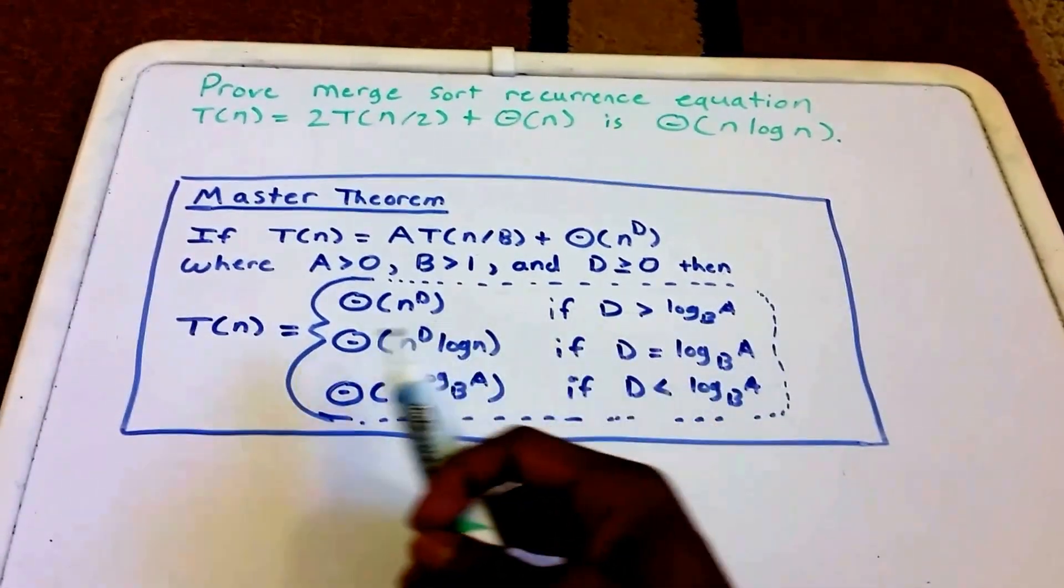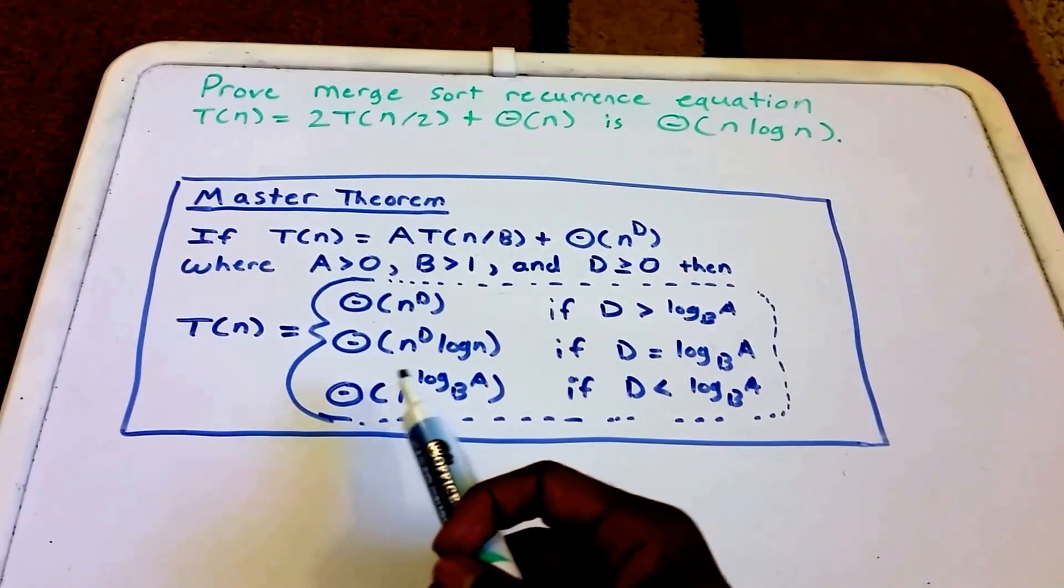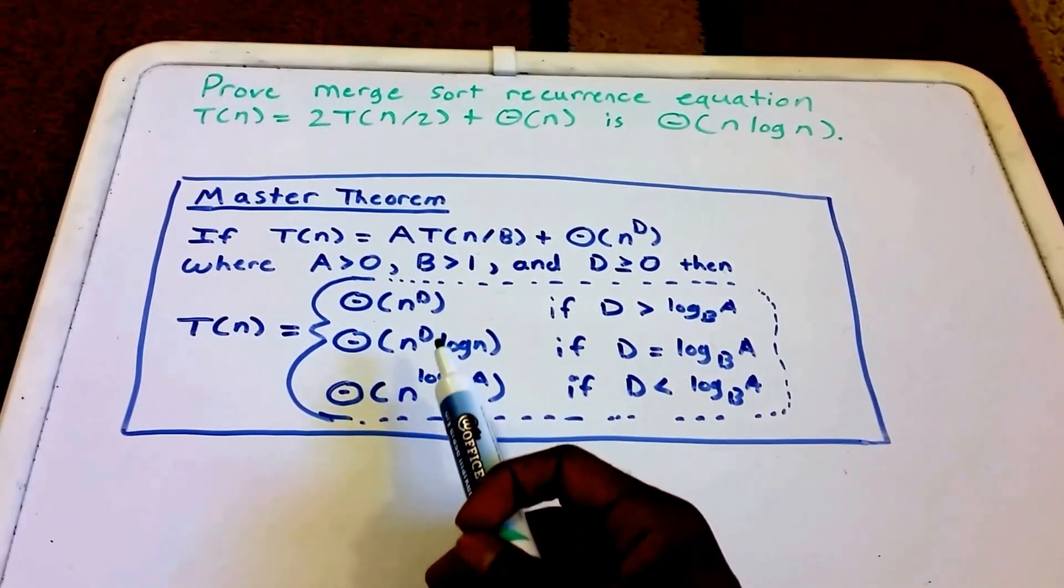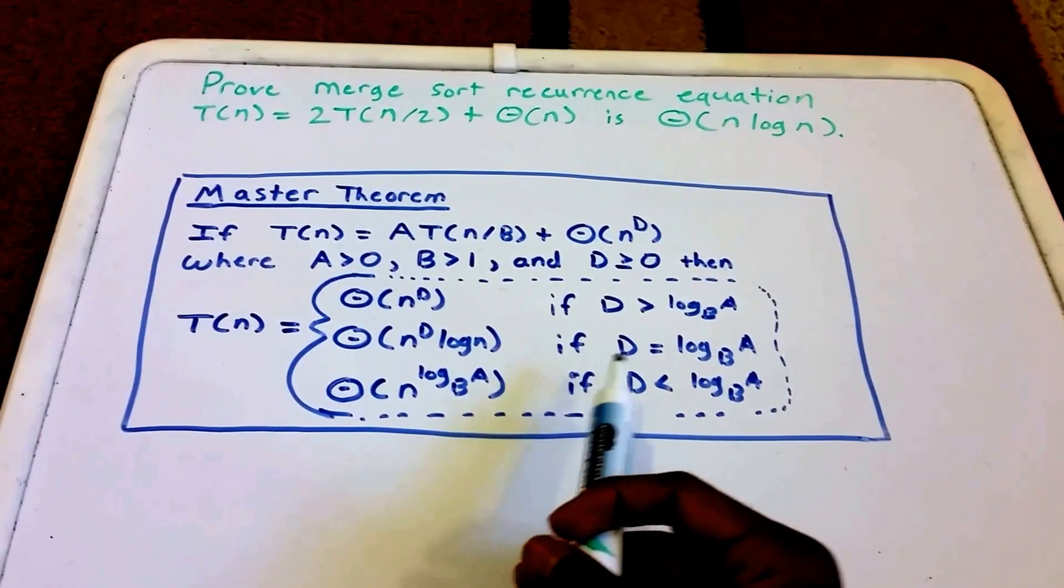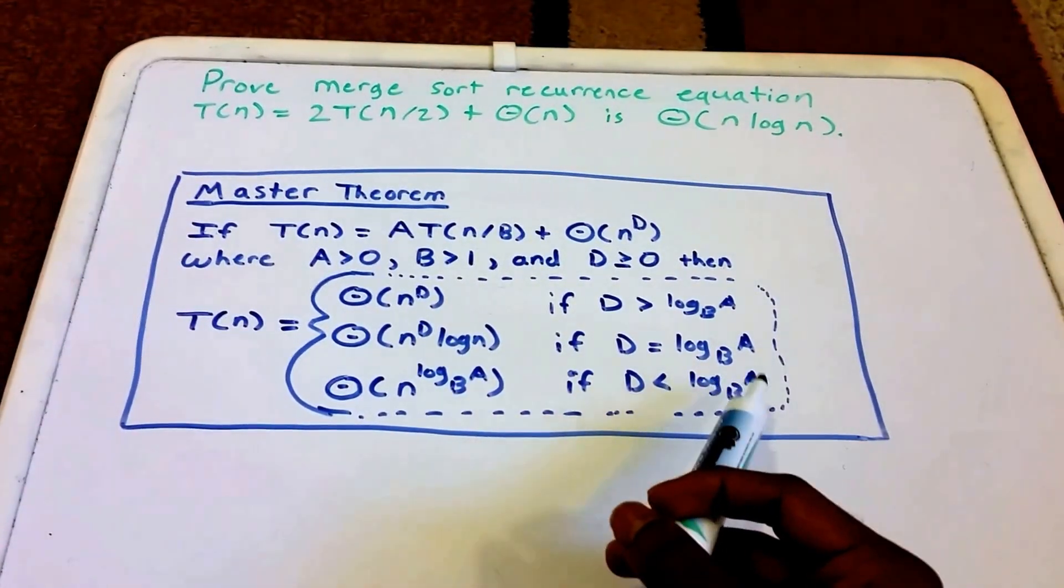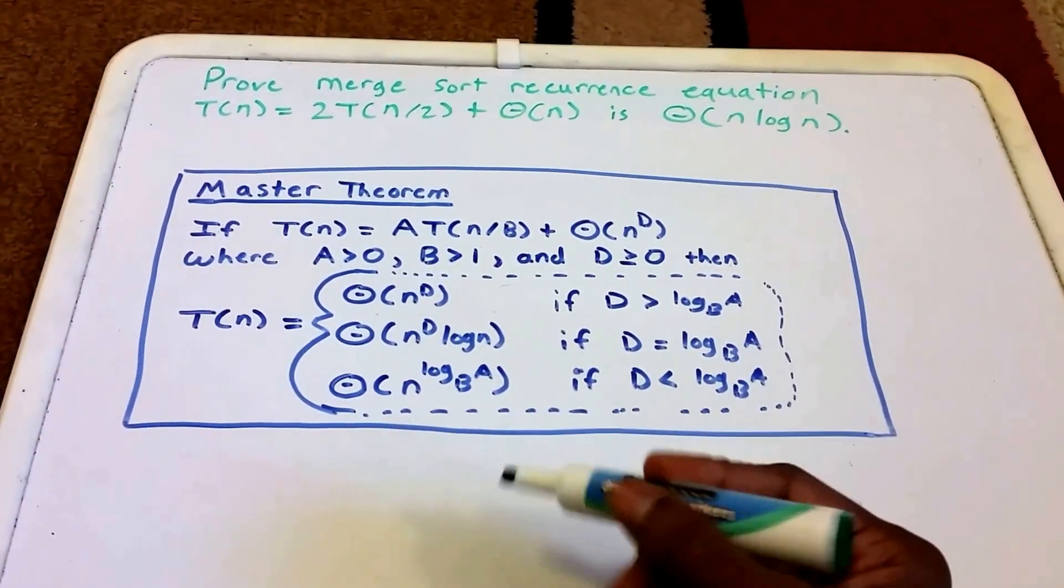And T(n) = Θ(n^(log_B(A))) if D < log_B(A). So let's go ahead and get started.